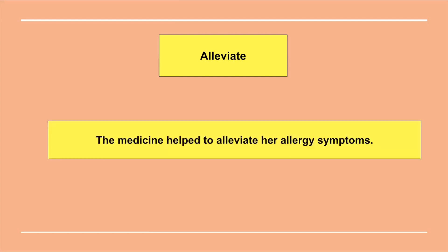The next word is alleviate. The meaning for alleviate is to make a suffering, deficiency or problem less severe. For example: the medicine helped to alleviate her allergy symptoms, meaning her allergy symptoms were less severe or reduced in their intensity after using the medicine. Hence, the word alleviate.